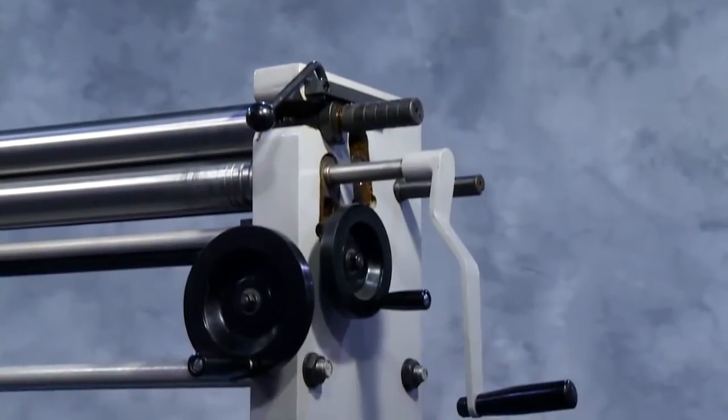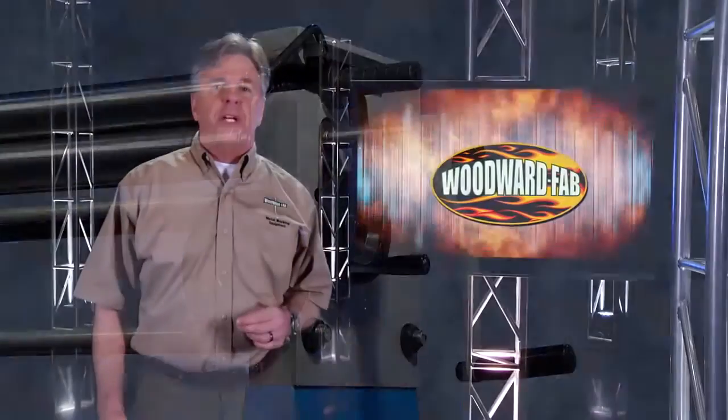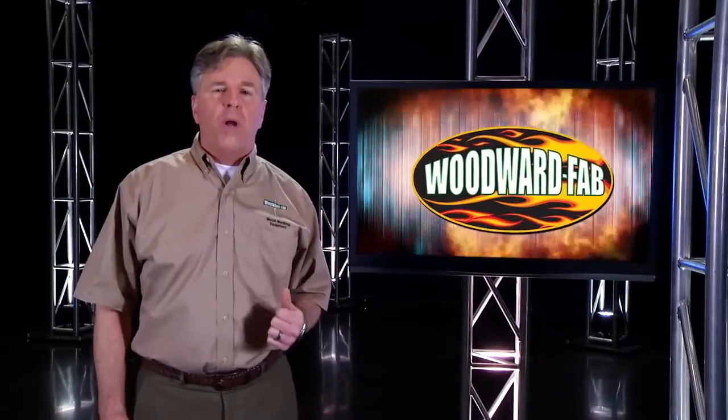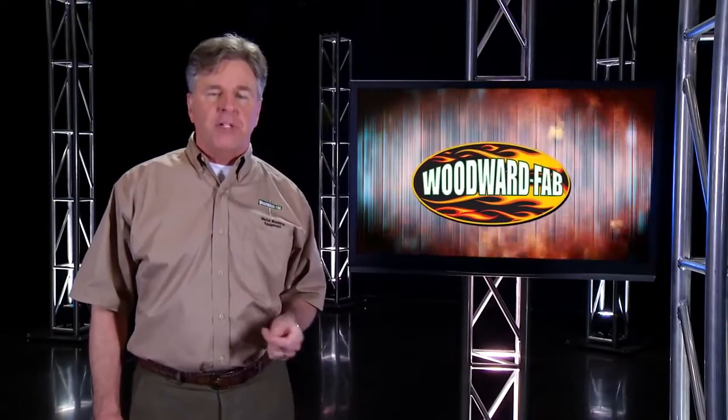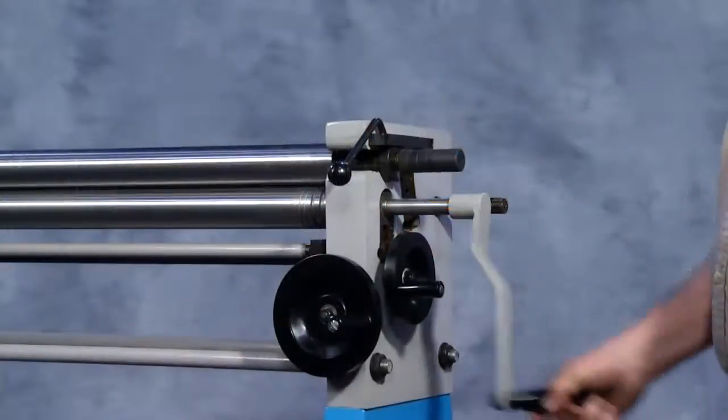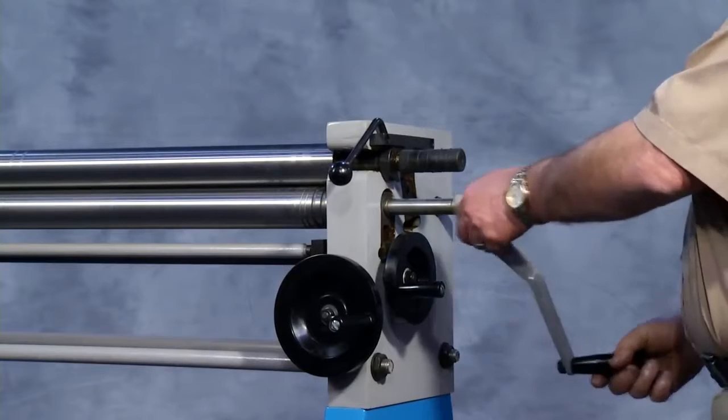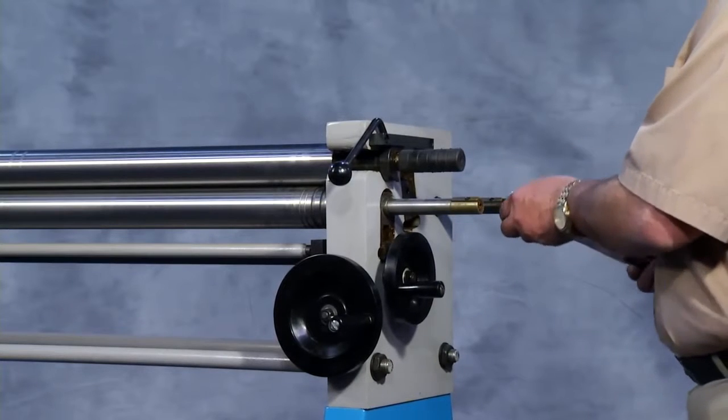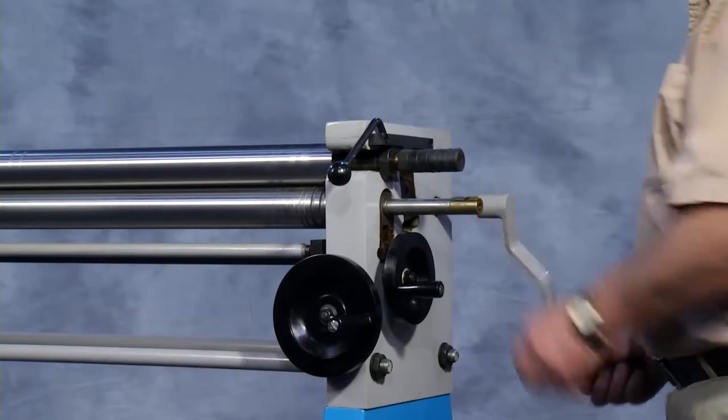One of the unique features of this machine is the two-gear ratio system, a one-to-one ratio for fast forming of thin stock and a three-and-a-half to one ratio for thicker materials. This change is made easily by moving the hand crank to a different position.